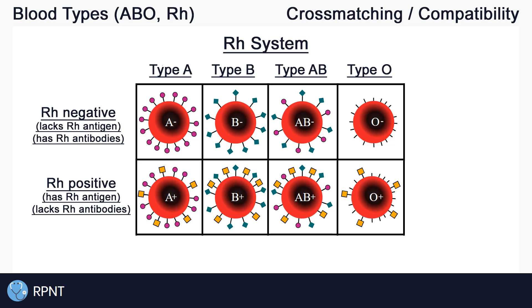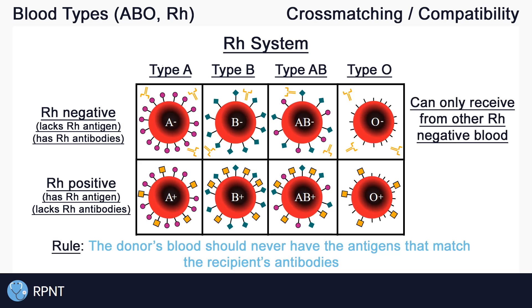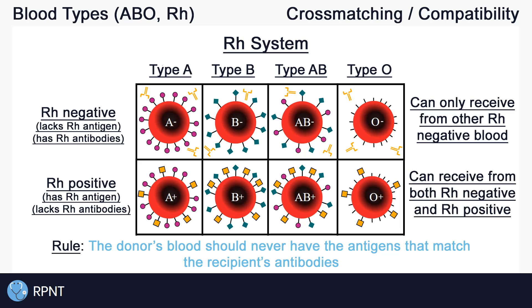So how does compatibility work with Rh groups? Remember the rule that the donor's antigens should never match the recipient's antibodies. Due to the presence of Rh antigens on Rh positive blood, an Rh positive donor cannot give blood to someone who is Rh negative, as the donor's Rh antigens would interact with the recipient's Rh antibodies causing a transfusion reaction. So anyone with Rh negative blood can only receive from others with Rh negative blood. Rh positive blood, however, lacks Rh antibodies and can therefore receive blood from both Rh negative and Rh positive types.